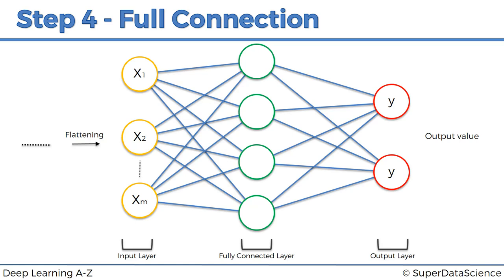Here we've got the input layer, a fully connected layer, and an output layer. The fully connected layer in artificial neural networks is what we used to call hidden layers. We're calling them fully connected layers here because they are hidden layers, but also a more specific type. In artificial neural networks, hidden layers don't have to be fully connected, whereas in convolutional neural networks we're going to be using fully connected layers.